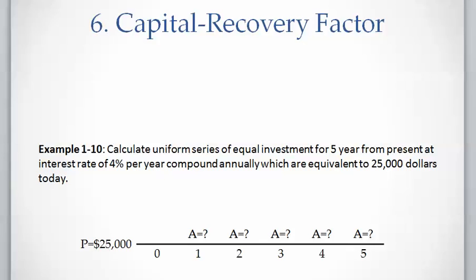First we draw the timeline. The left side is the present time where we have twenty-five thousand dollars. N equals five and above each year starting from year one to year five we have A that has to be calculated.